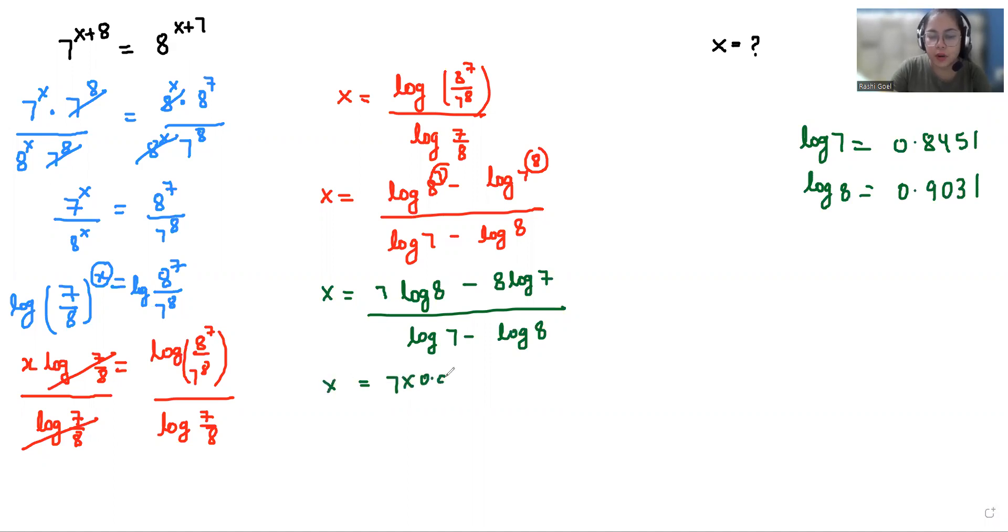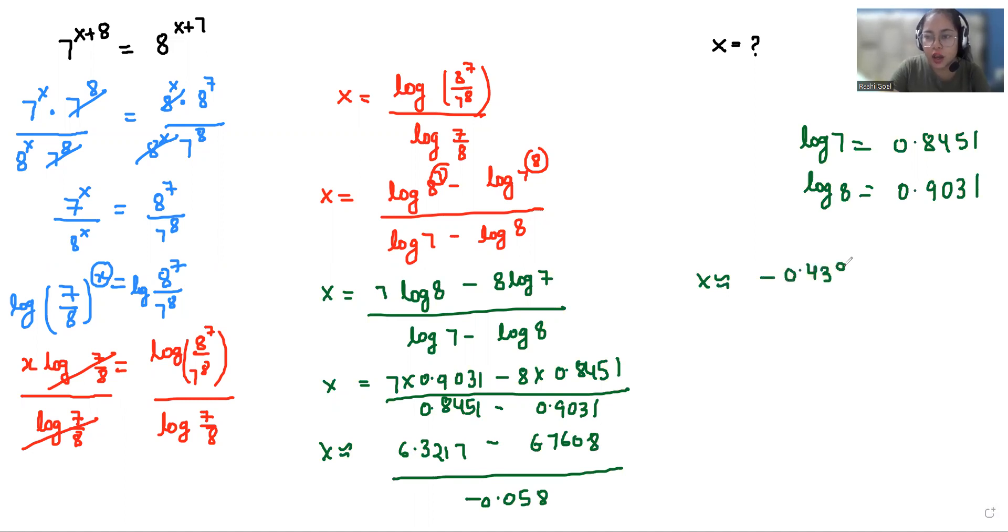So x = (7 × 0.9031 - 8 × 0.8451) / (0.8451 - 0.9031). So x = (6.3217 - 6.7608) / (-0.058), which equals -0.4391 / -0.058.